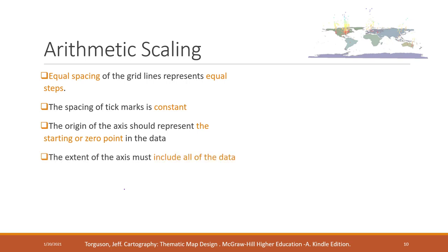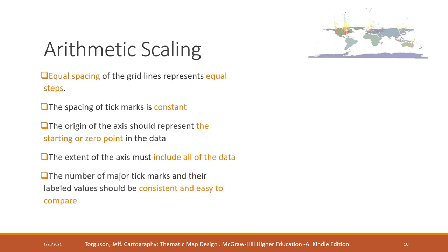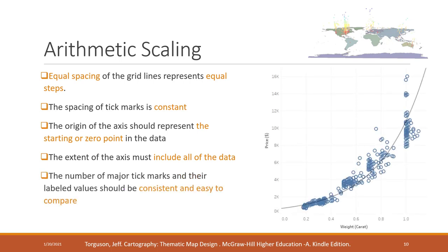The extent of the axis must include all the data. It is easier to compare because the major marks and their labels should be consistent. In arithmetic scaling, we can see that the difference is the same — 0.2, 0.2, 0.2 on the x-axis, and 2k, 2k, 2k on the y-axis. That is arithmetic scaling.